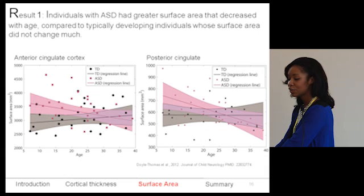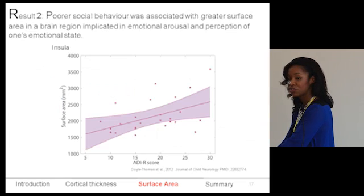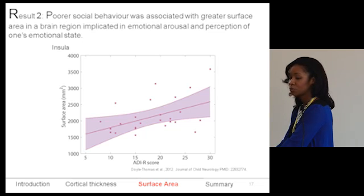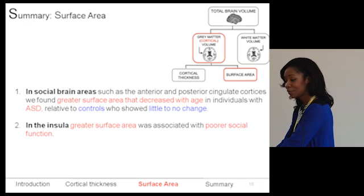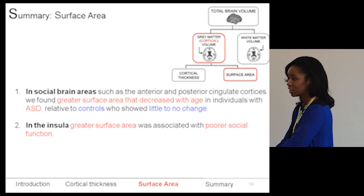In the ASD group, depicted in pink, the anterior and posterior cingulate started with greater surface area that decreased with age — different from controls who showed little to no change across age. Looking at social brain areas and their relation to social scores on the ADIR, we found that increased surface area was related to poorer scores. In the insula specifically, greater surface area was associated with poorer social function.